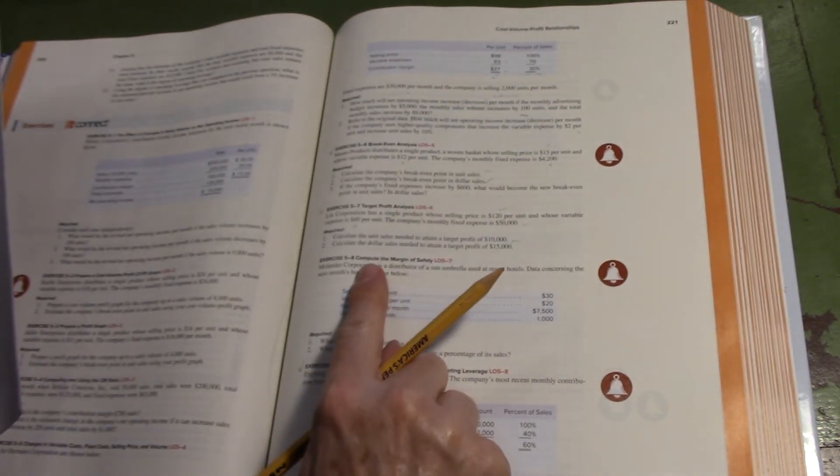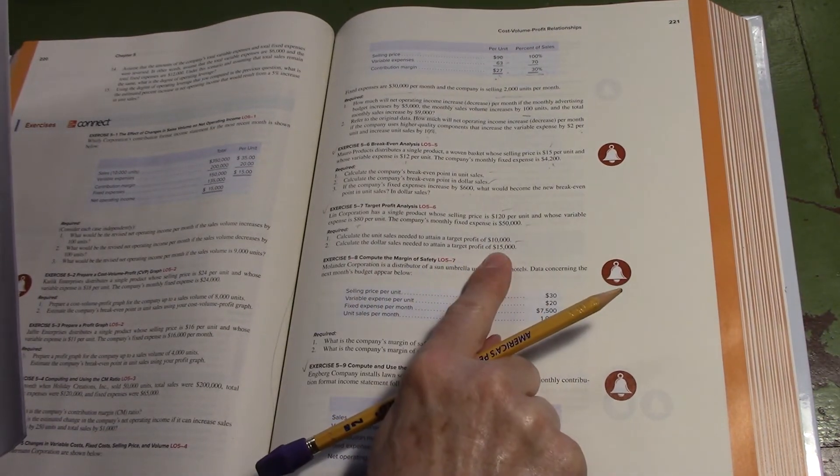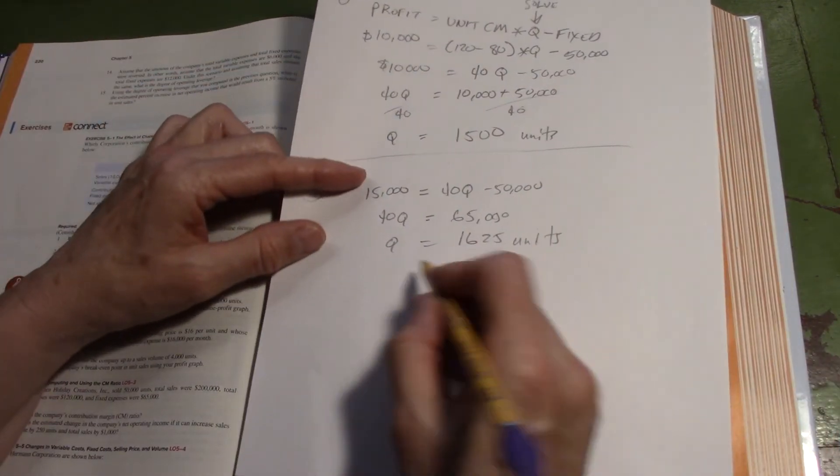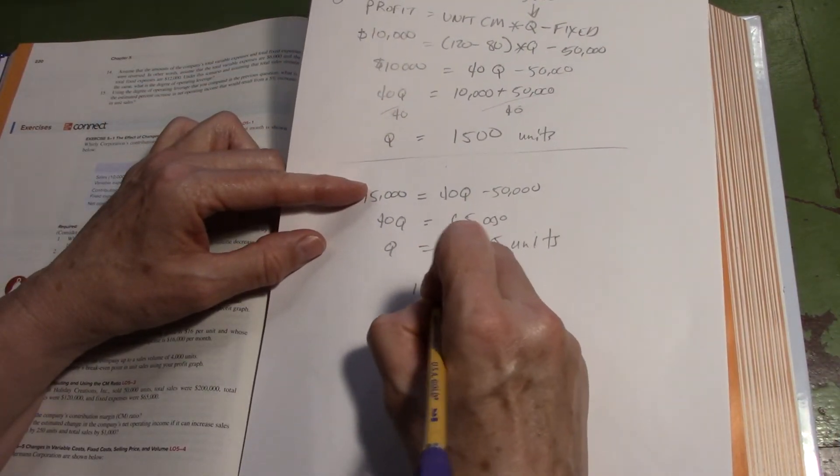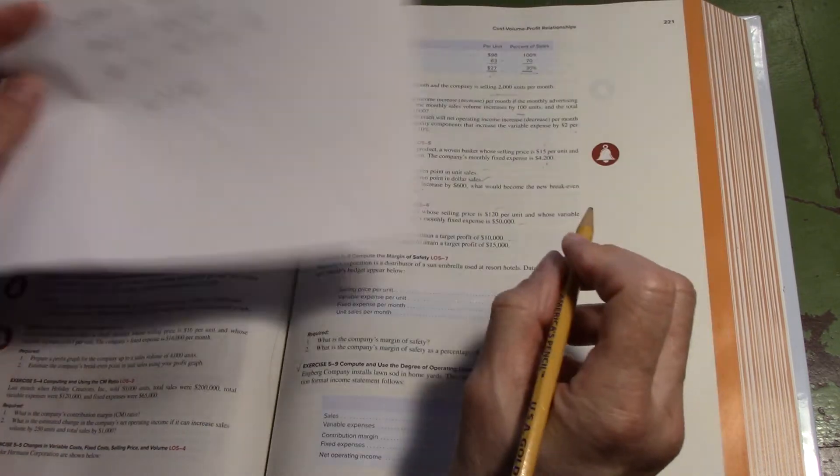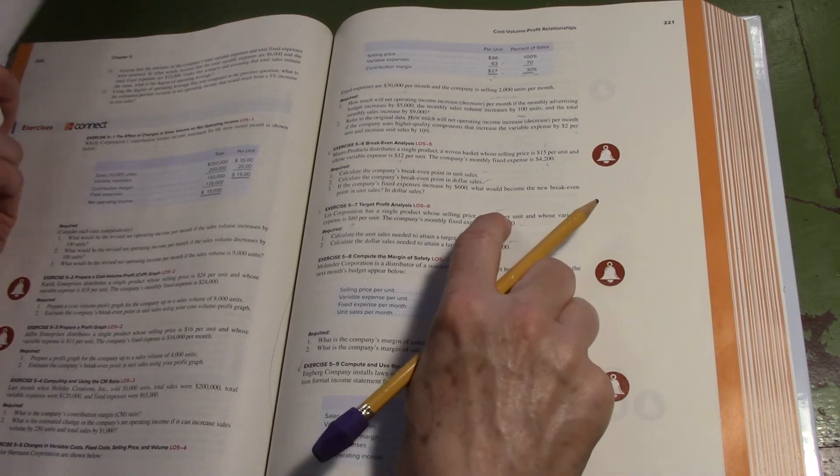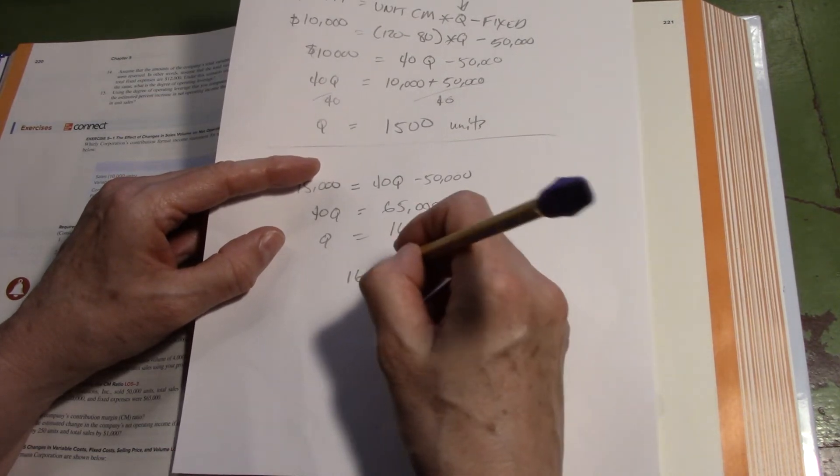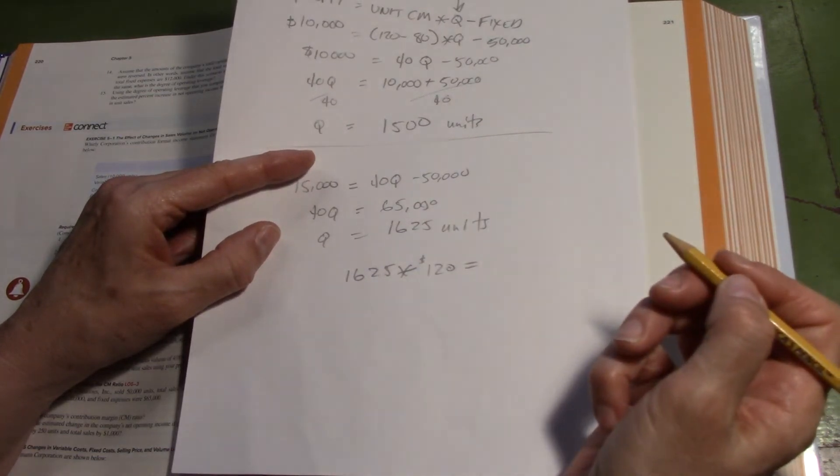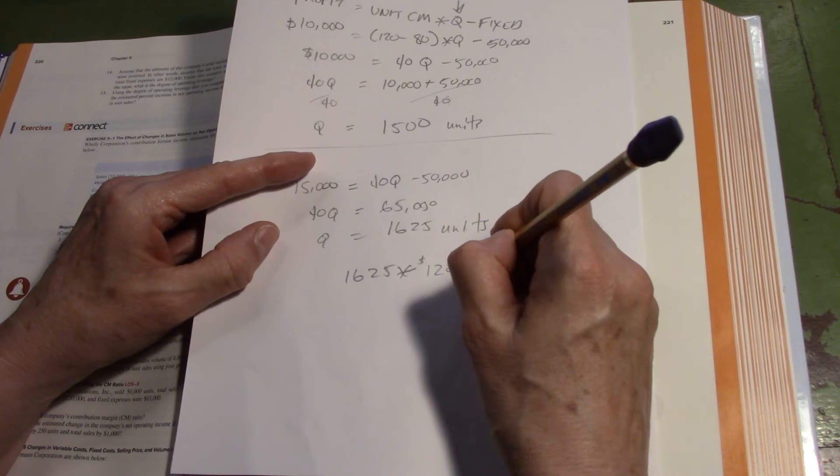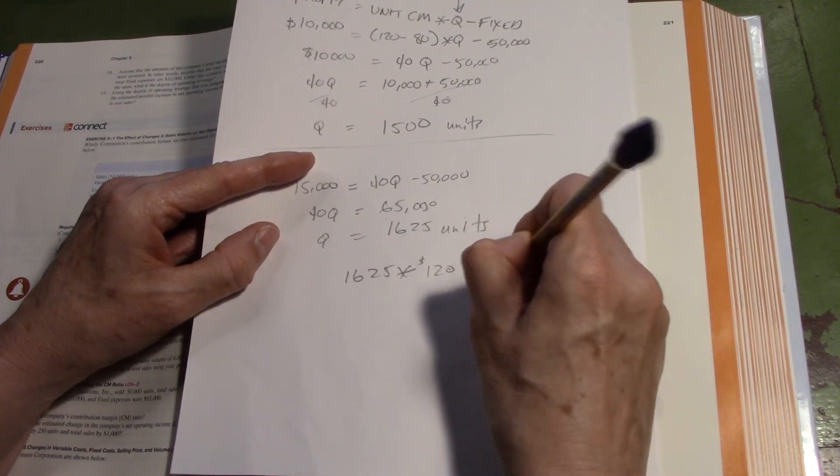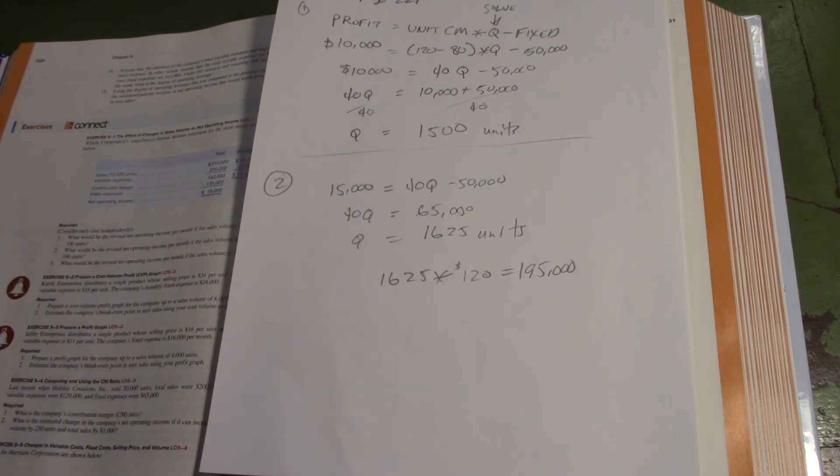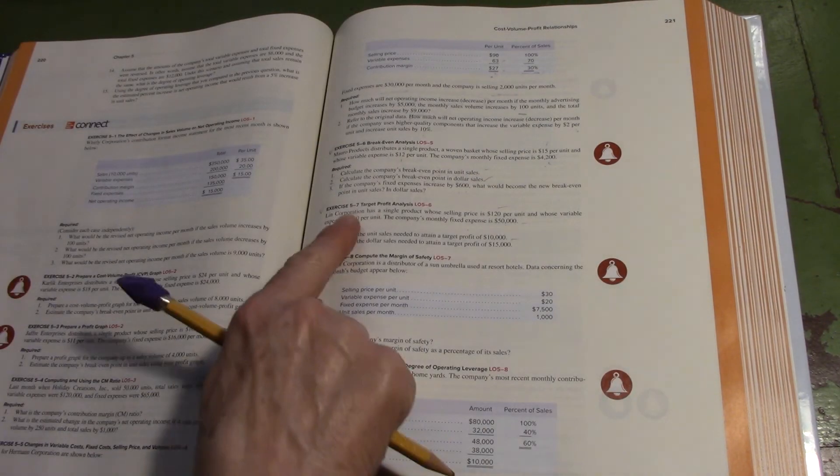The question wants dollar sales. Well, then you just take your units, 1,625, times what you sell them for, which is 120. 1,625 units times $120 per unit. You multiply those and that's $195,000. There you go, all solved up.